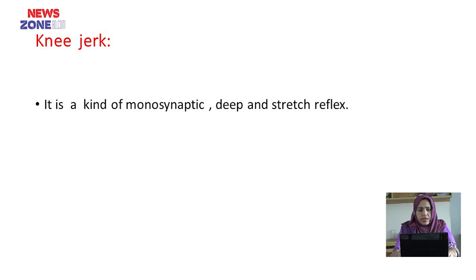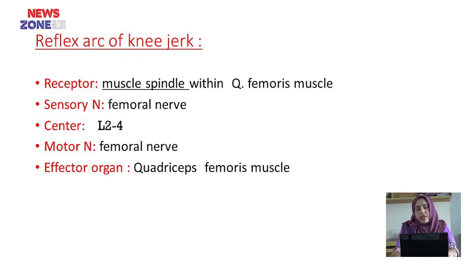Now we discuss the knee arc. The knee arc is a monosynaptic, deep, and stretch reflex. The reflex arc of the knee arc is as follows: the receptor is the muscle spindle within the quadriceps femoris muscle; the sensory nerve is the femoral nerve; the center is lumbar 2 to lumbar 4 of the spinal cord; the motor nerve is the femoral nerve; and the effector organ is the quadriceps femoris muscle.